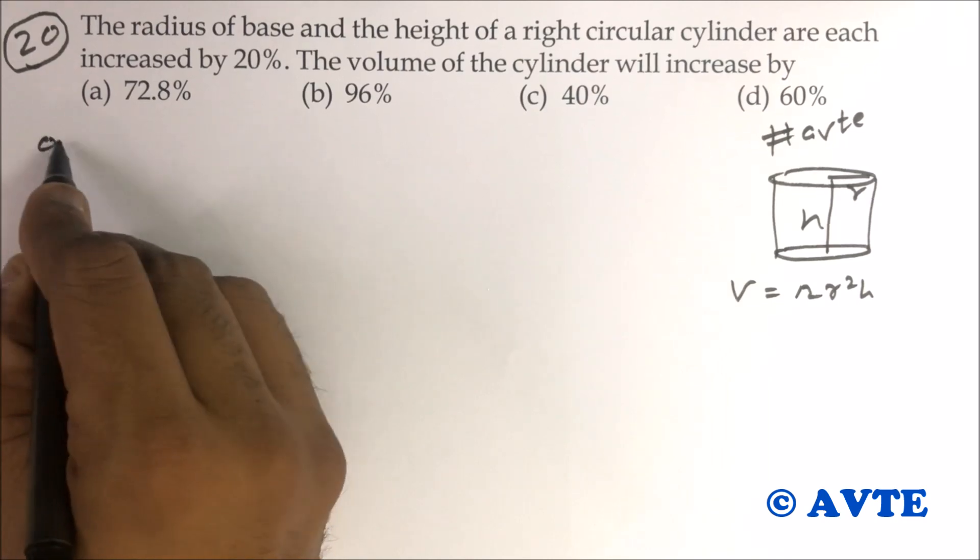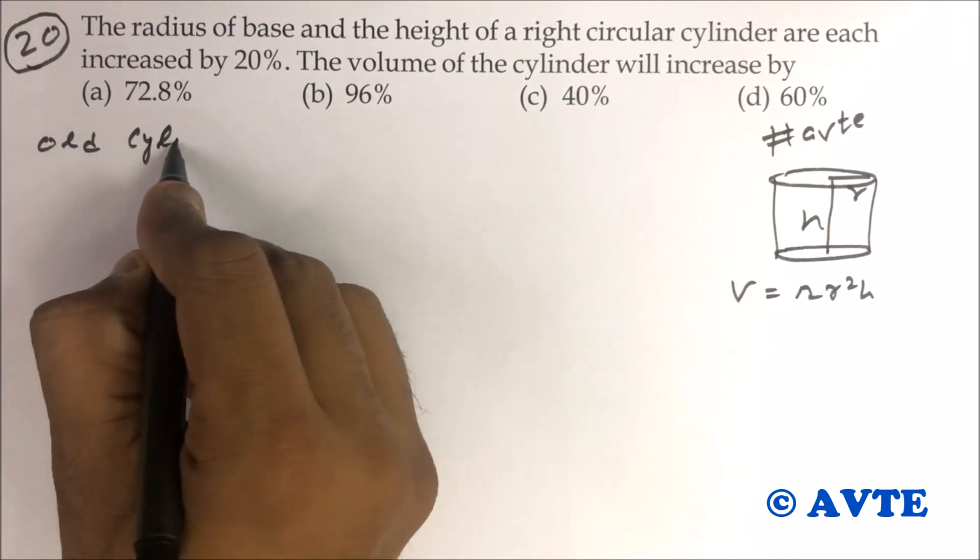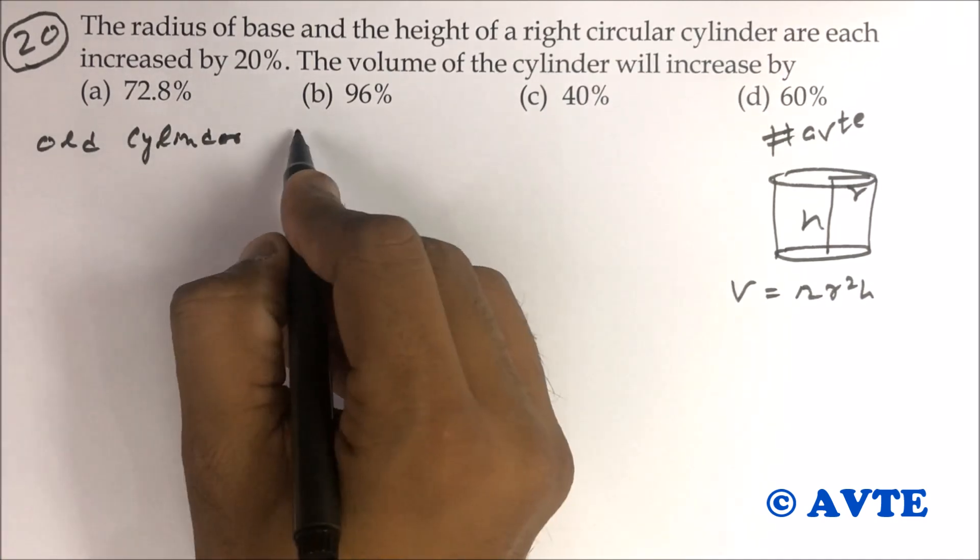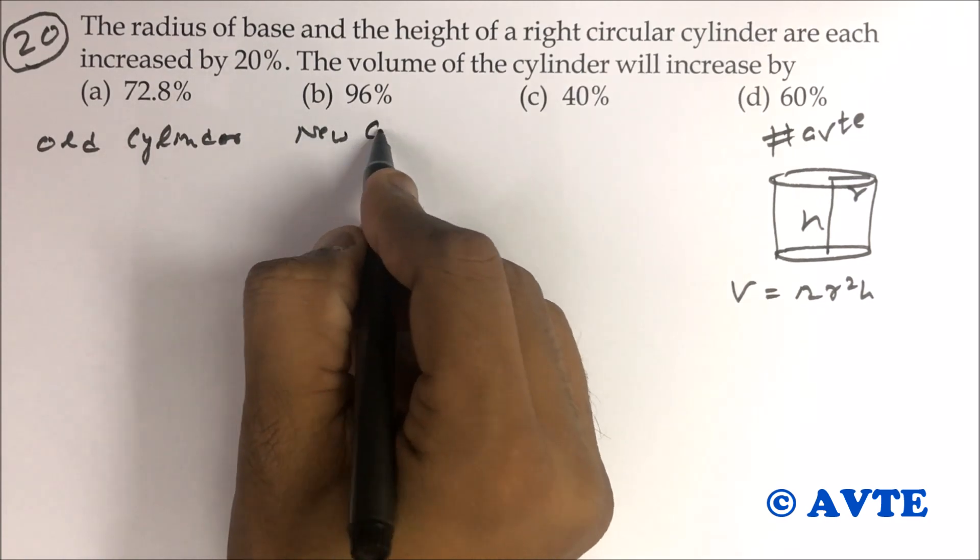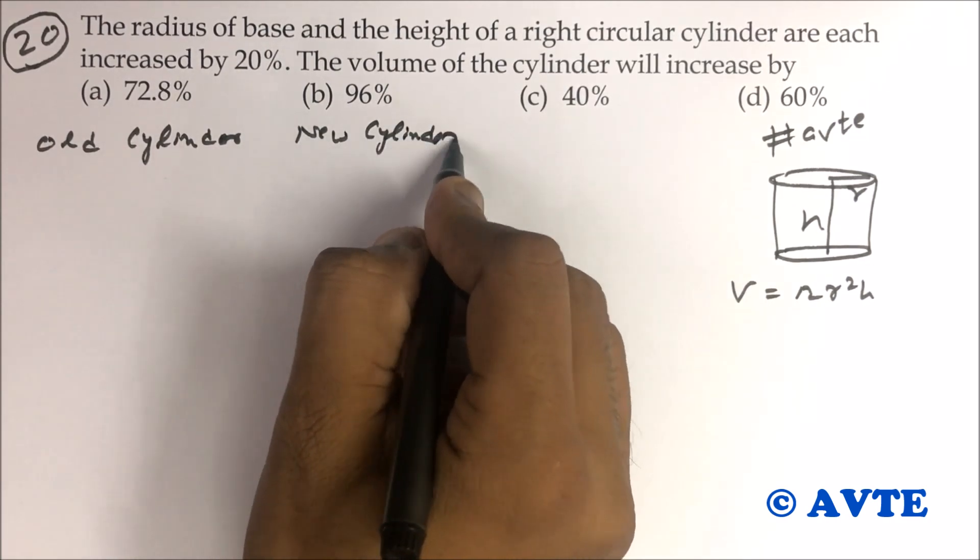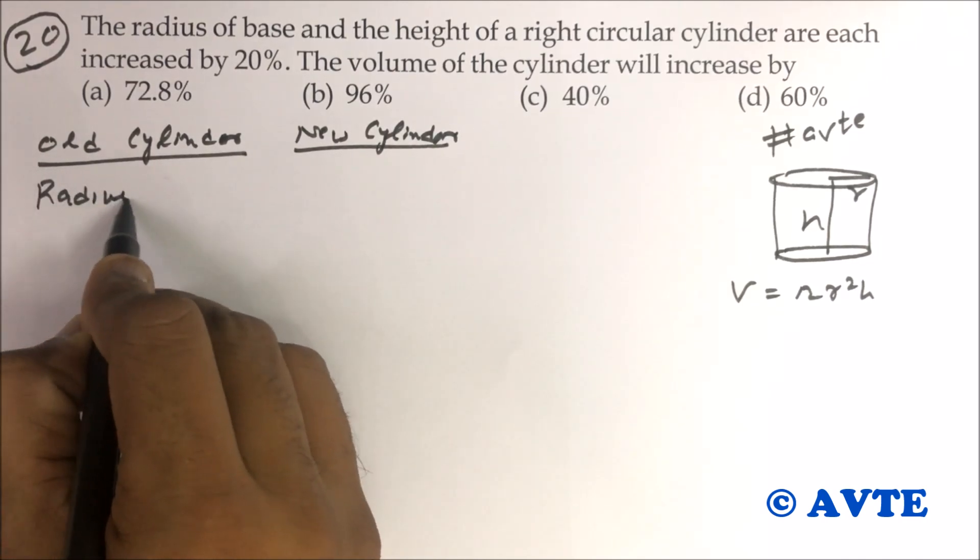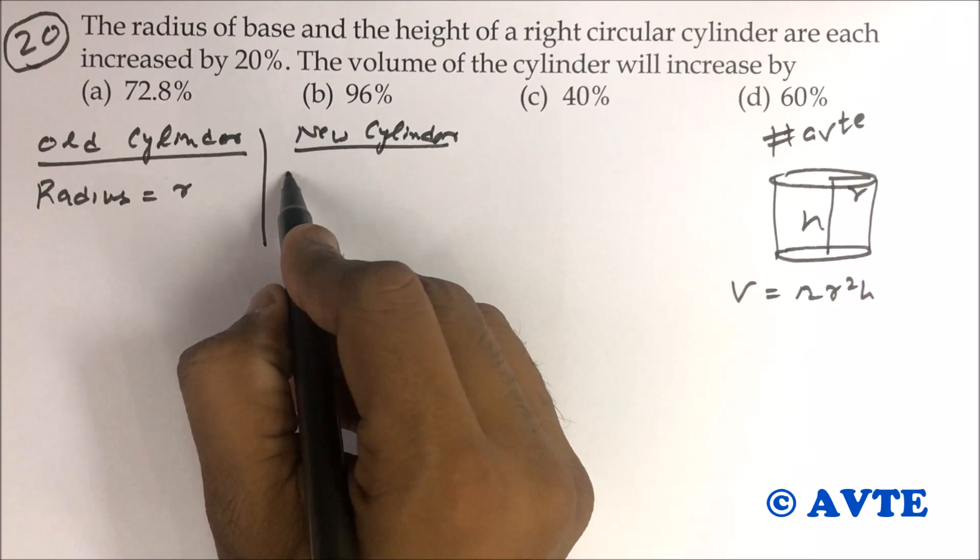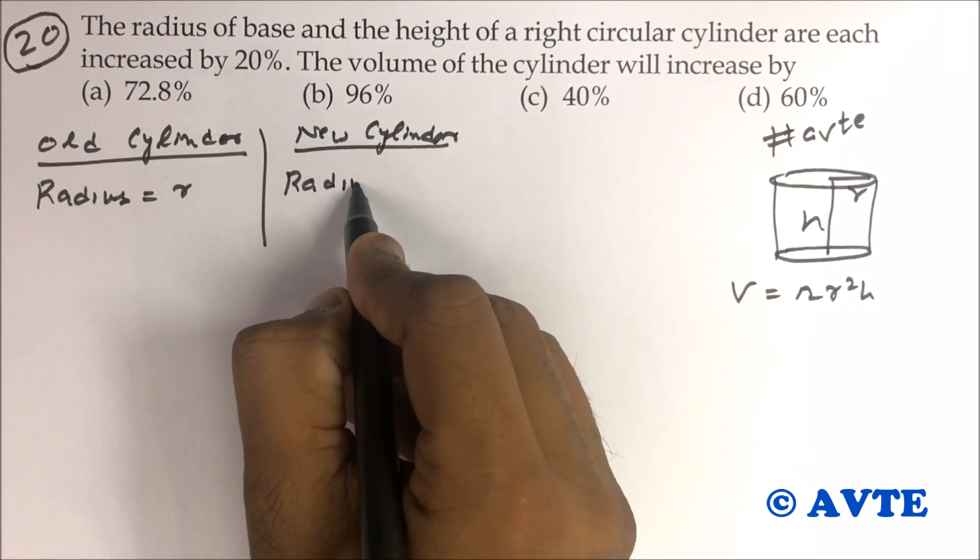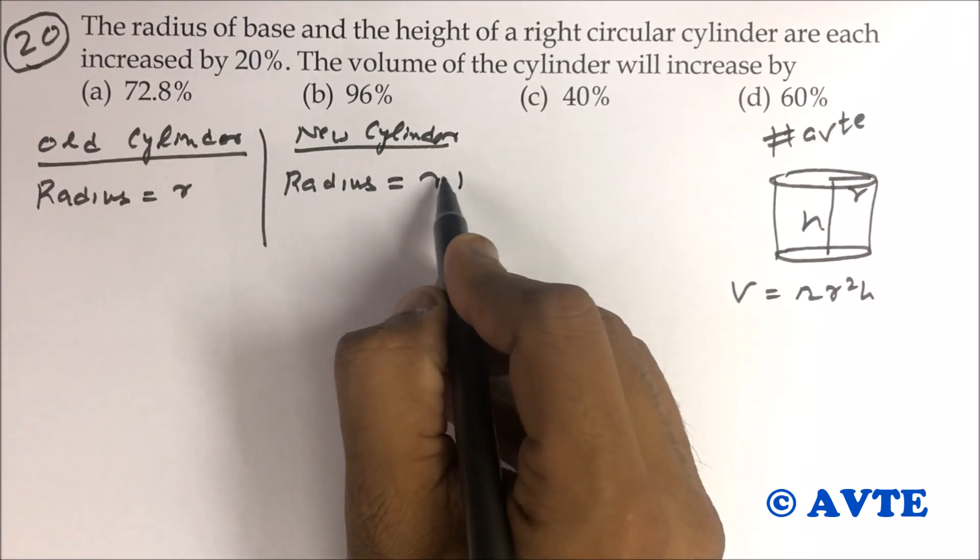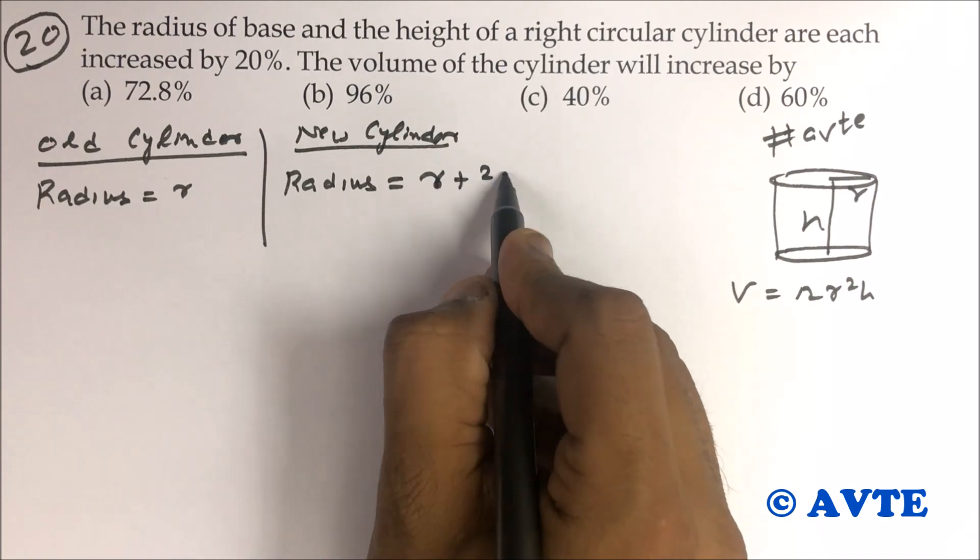So that is the concept of old cylinder and new cylinder. Okay, so this is radius R and the new radius is R plus 20% of R.